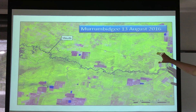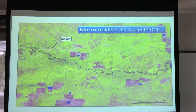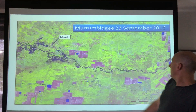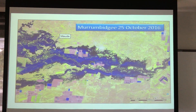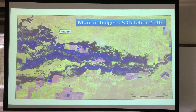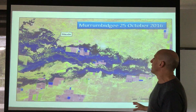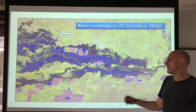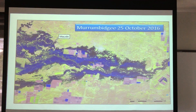Looking at the Murrumbidgee back in August this year — well before flooding, with Maud Weir indicated. The flood started to arrive and inundated some small patches of floodplain, then really came through and inundated huge areas. Environmental water targets small billabongs here and there, or small areas of floodplain — nothing like this inundation. So the idea that environmental water caused this problem is just not substantiated.